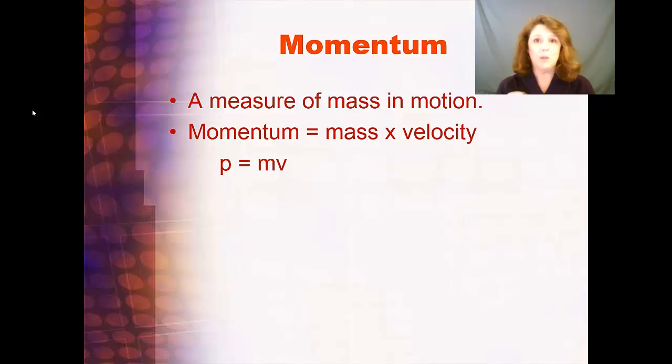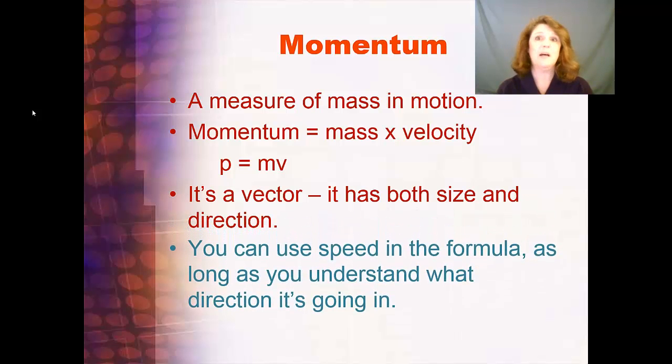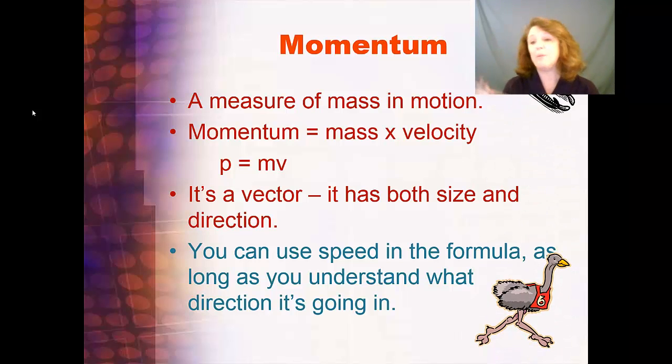Momentum is abbreviated lowercase p. I don't know why, but there's apparently too many m's in the physics world. So, momentum equals mass times velocity looks like this. It's a vector. It has both size and direction. So, make sure that you understand that it could be a turning thing. You can use speed in the formula as long as you understand what direction it's going in. So, if your word problem tells you speed, you can do mass times speed, and that's okay. As long as somewhere in the word problem it describes the direction that the collision is happening. And it usually is a collision with momentum.